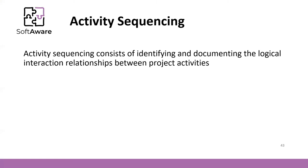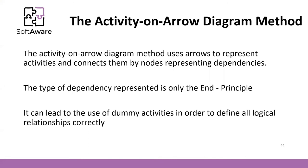You have to build the Activity on Arrow diagram method. The Activity on Arrow diagram method uses arrows to represent activities and connects them by nodes representing dependencies. The typical type of dependency is end-to-start, which means that once you have a node after another node, that node represents a work package or task or activity, and it must end that activity before the next one starts. Sometimes we have to use dummy activities in order to define logical relationships correctly.